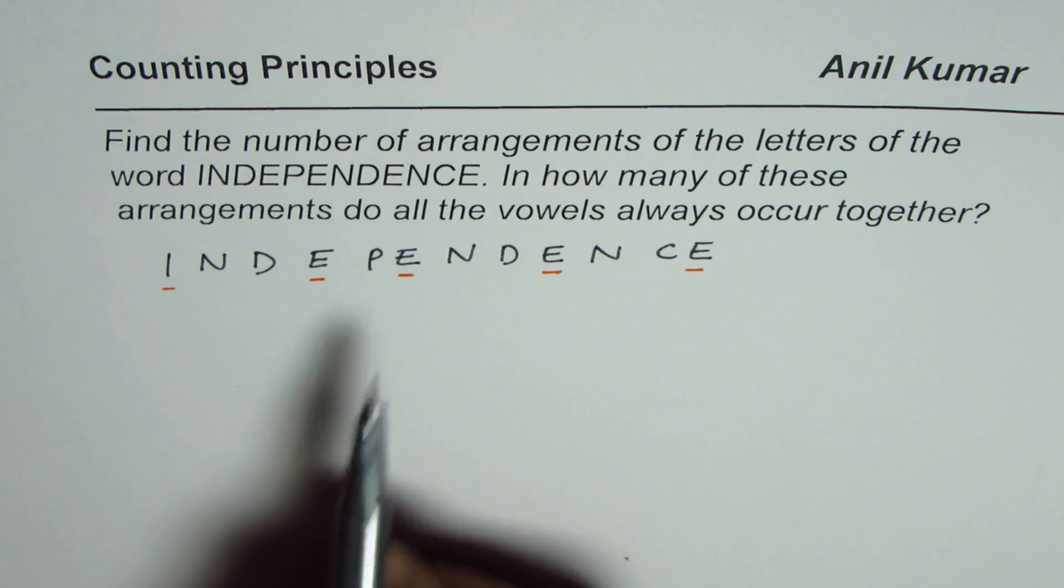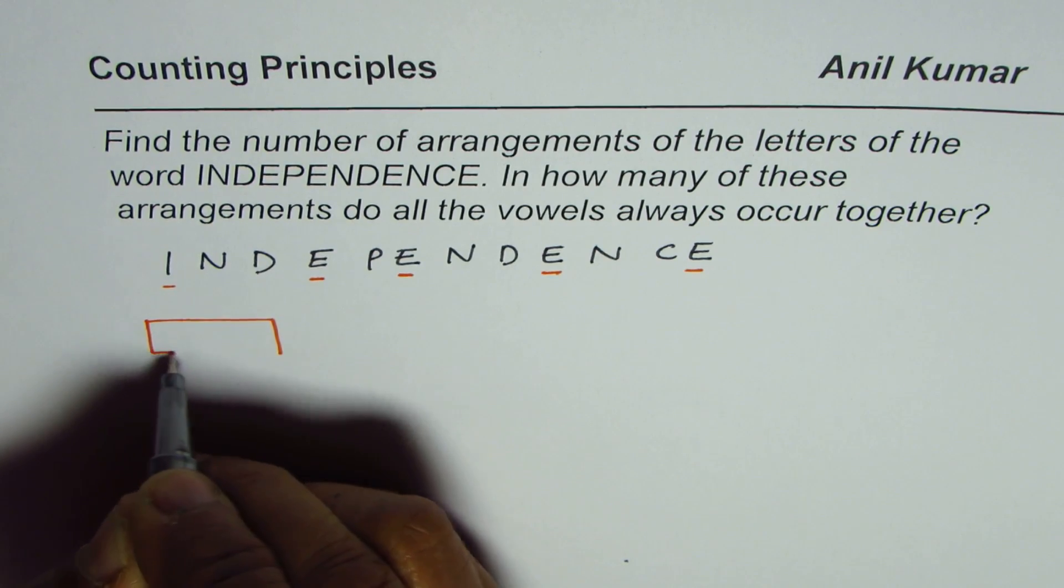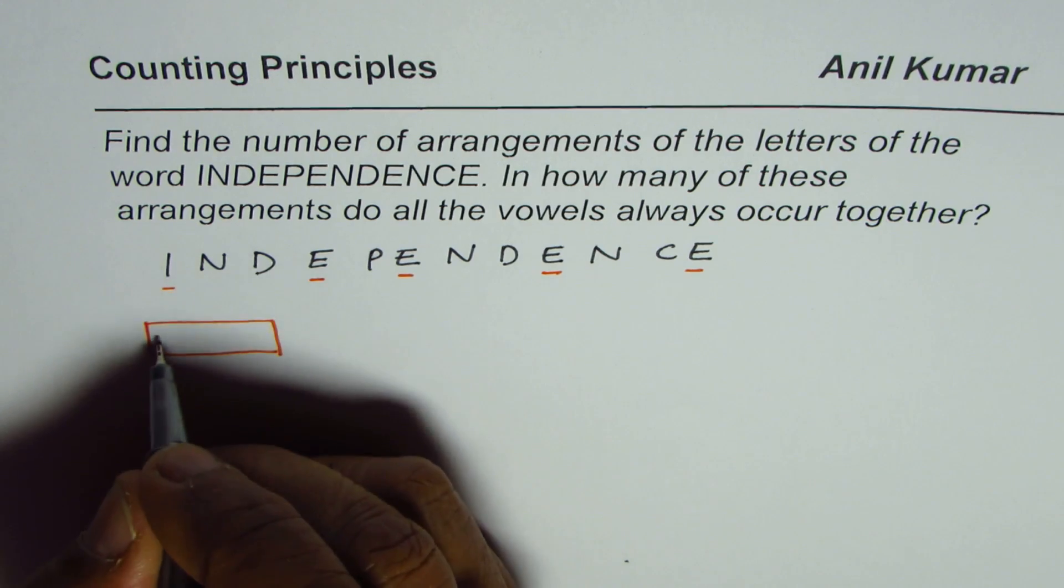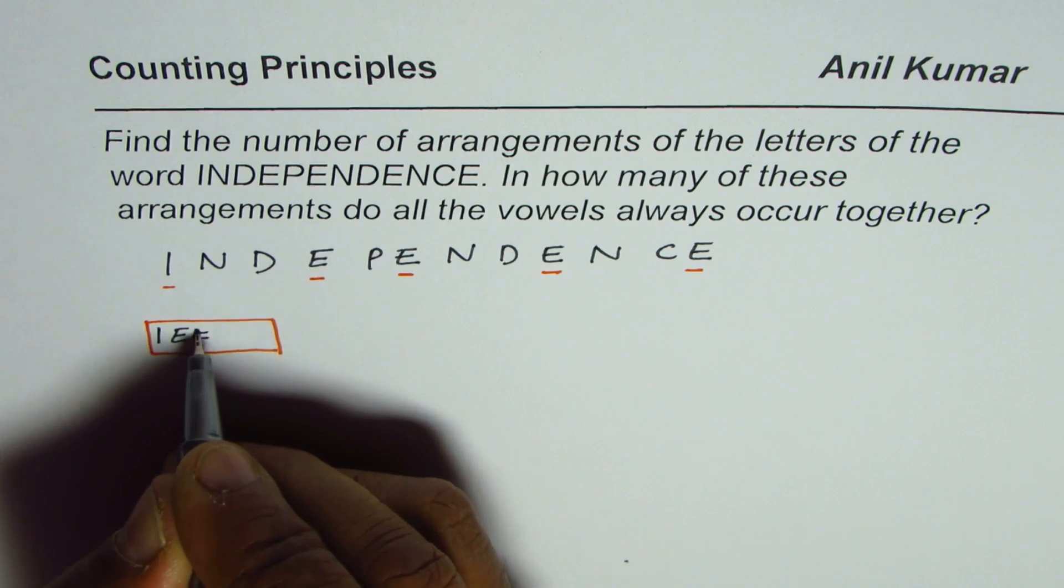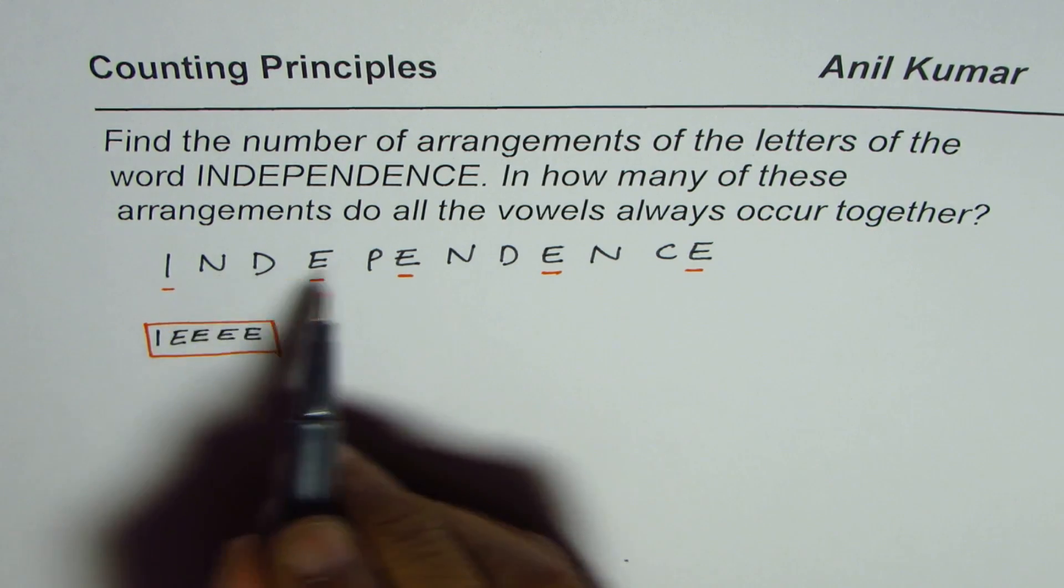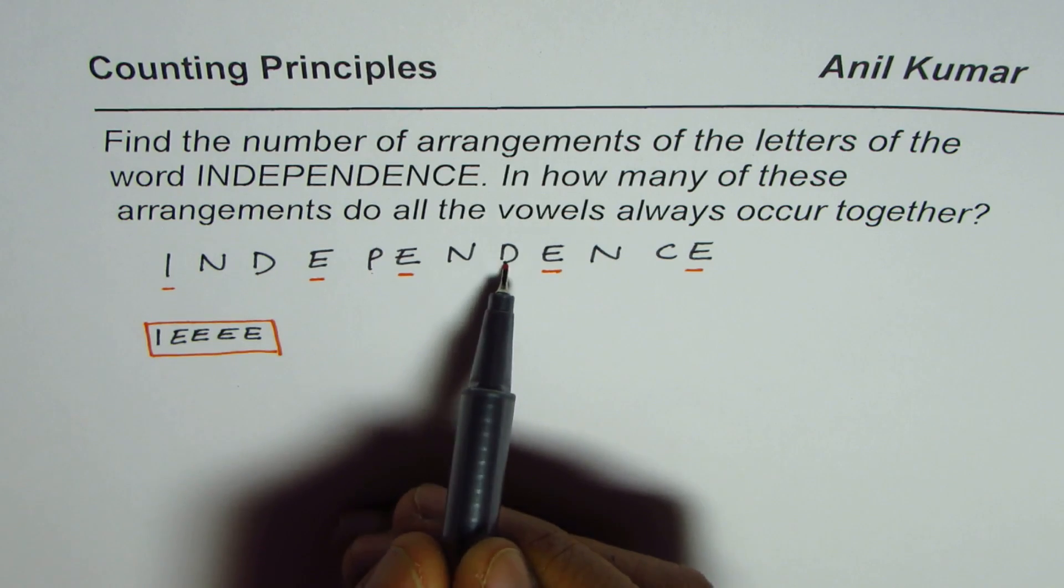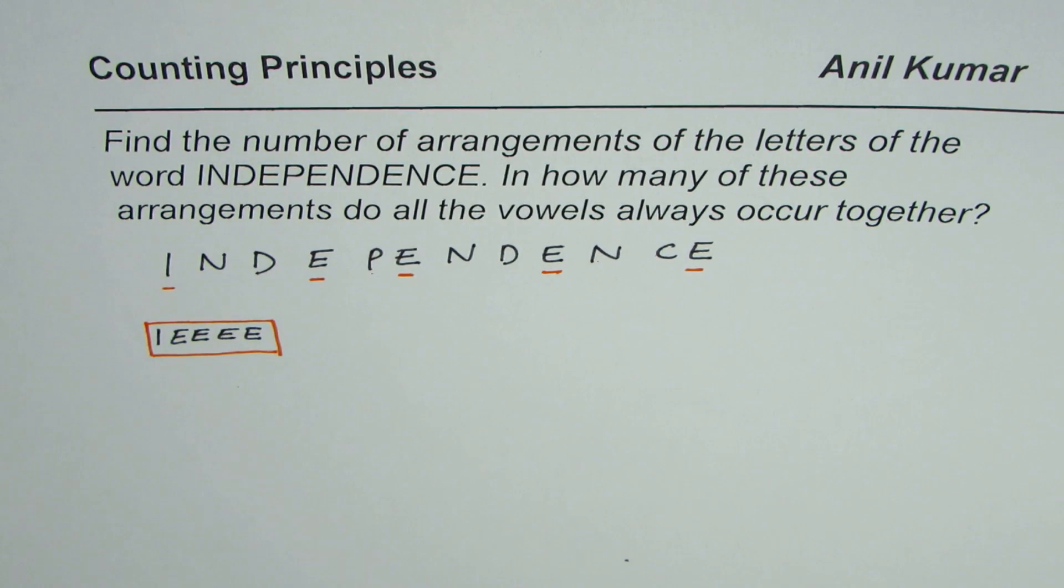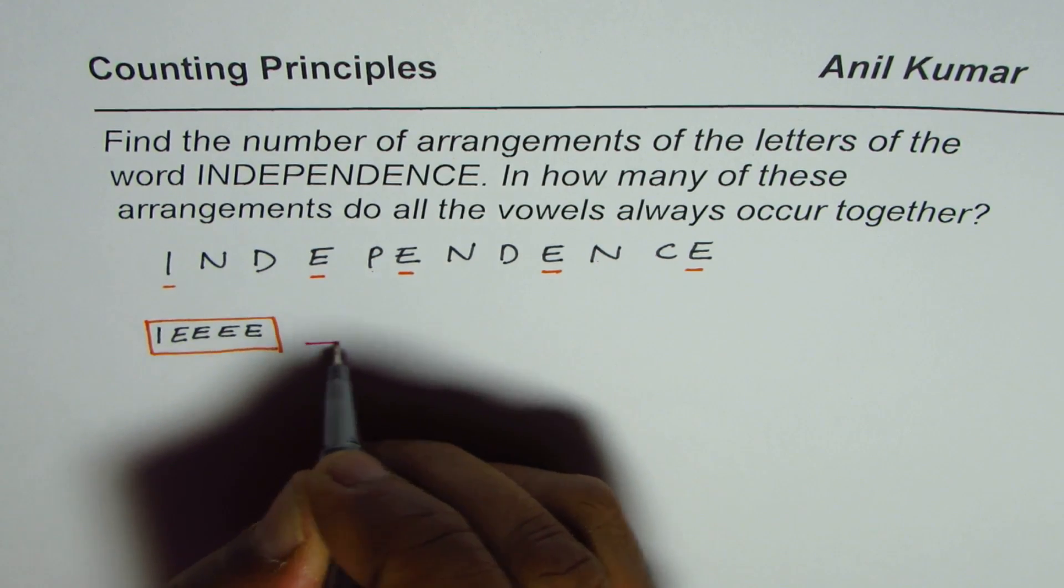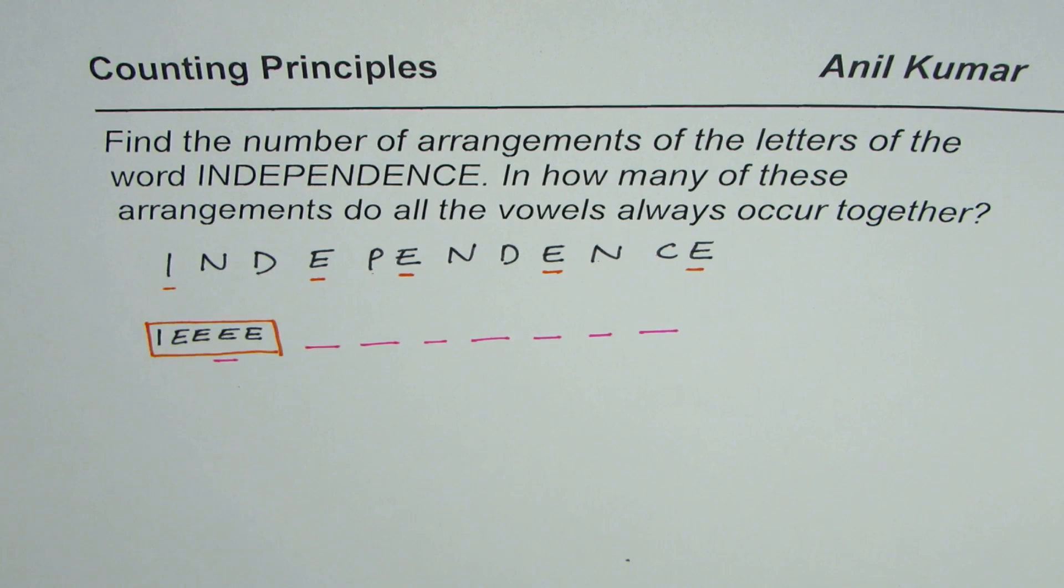So these vowels should come together. What we can do is make a block in which we have one I and four E's. And then rest of the letters. So the rest are how many? We have seven letters. So in a way, we will count this block as one and seven others. So we are left with a combination of these eight units.